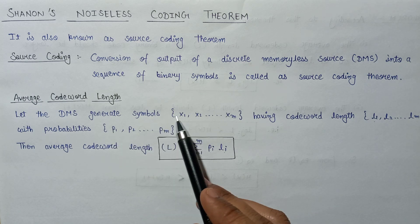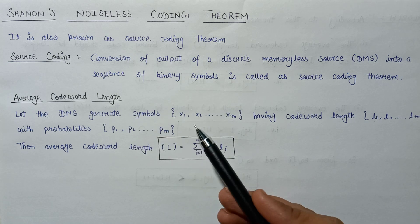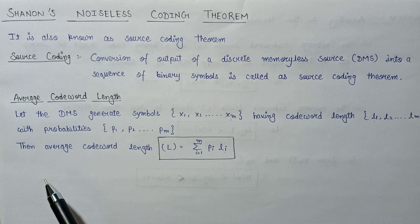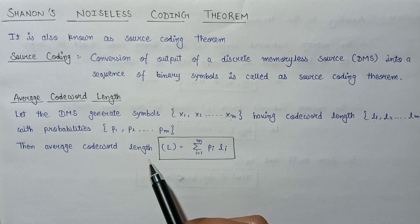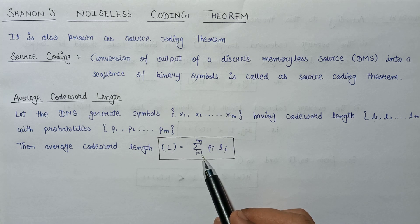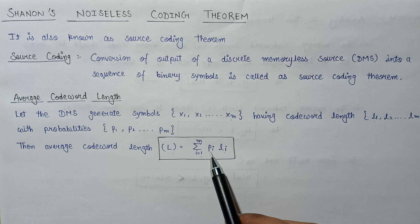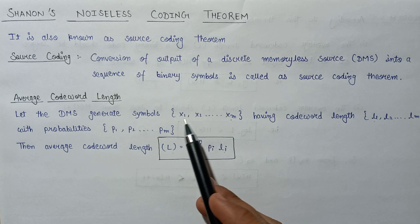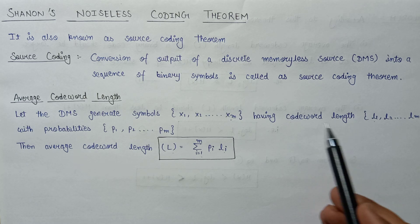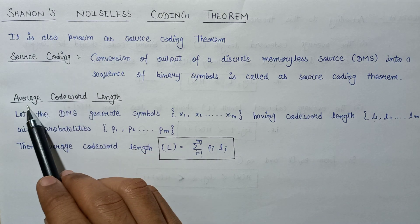All symbols generated by the discrete memoryless source have probabilities ranging from p1, p2, till p_m, where p1 is the probability of occurrence of x1, p2 of x2, and so on. The average codeword length L is calculated as L = summation from i=1 to m of p_i * l_i, where p_i is the probability and l_i is the codeword length of each symbol.